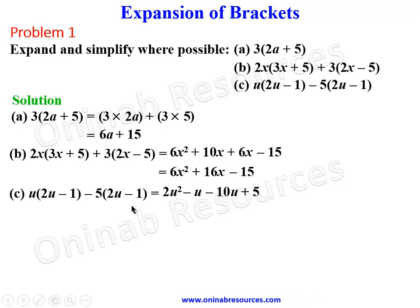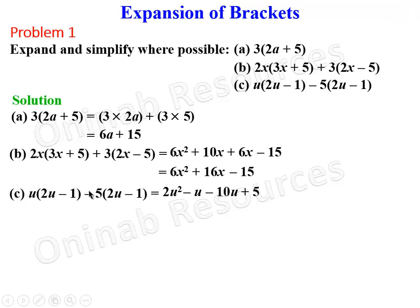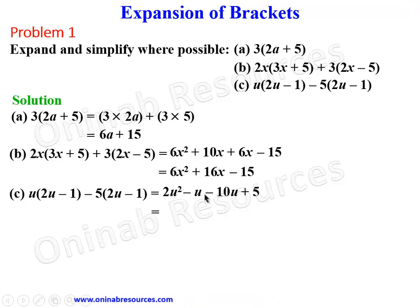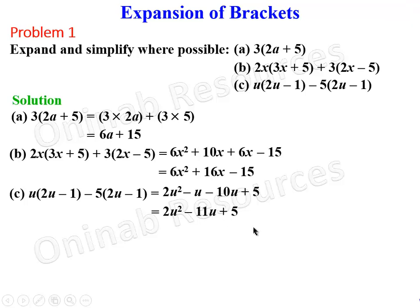A common mistake among students is to use only 5 to multiply what is inside the bracket — you must use the full minus 5. Simplifying: minus u minus 10u gives minus 11u, so the final result for part c is 2u squared minus 11u plus 5.